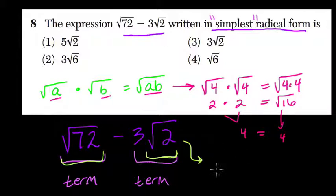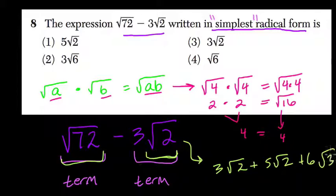The idea is that, let's say I have 3 times the square root of 2 plus 5 times the square root of 2 plus 6 times the square root of 3. Here's an example. I can combine these two terms because they both are counting the number of square roots of 2. It's just like if I had 3x plus 5x.